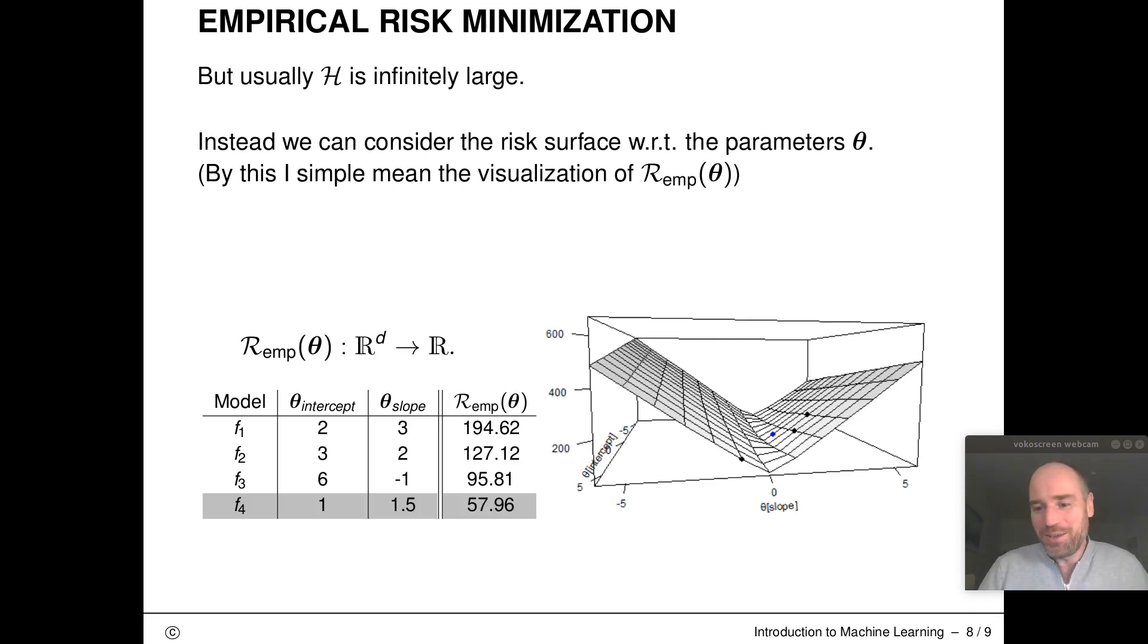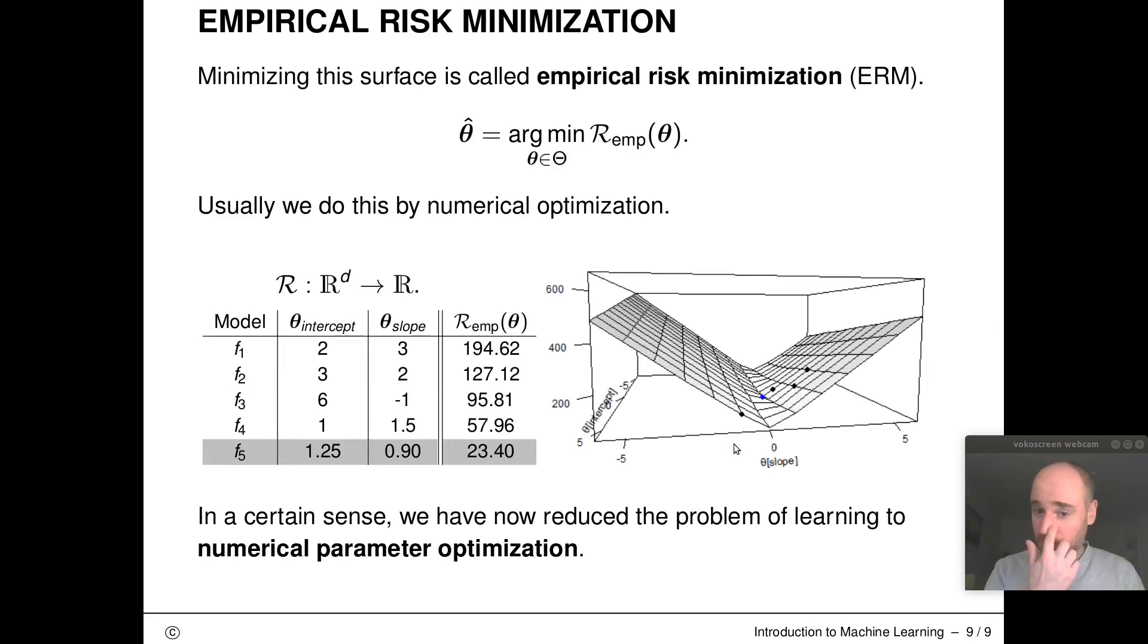I can now simply consider the risk surface with respect to my parameter vector theta. With risk surface I basically mean just the visualization of this R function. I can now think about optimizing this for the best parameter point on that surface with minimal risk. Usually I'll proceed by numerical optimization. I'll walk down this error surface, for example using gradient descent or stochastic gradient descent.